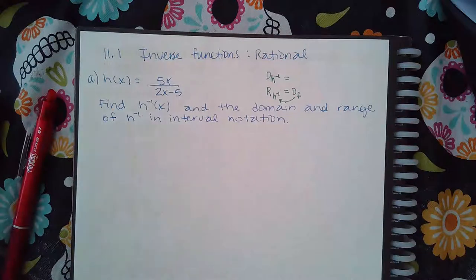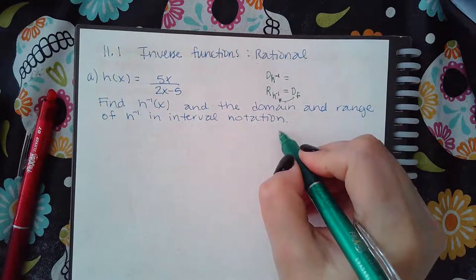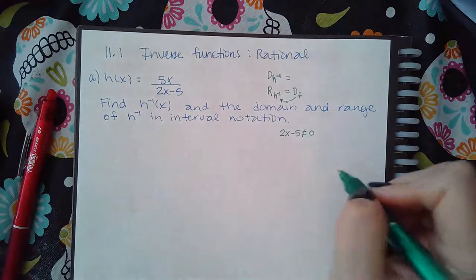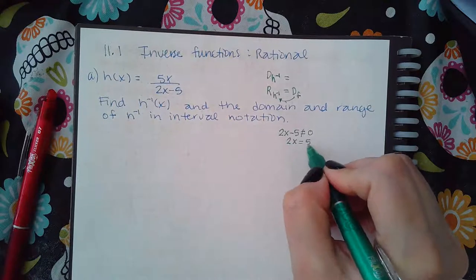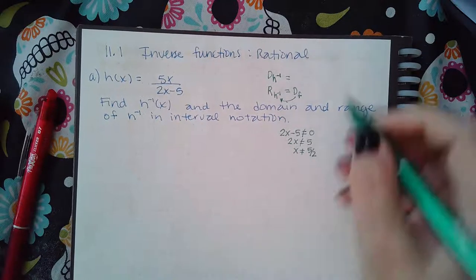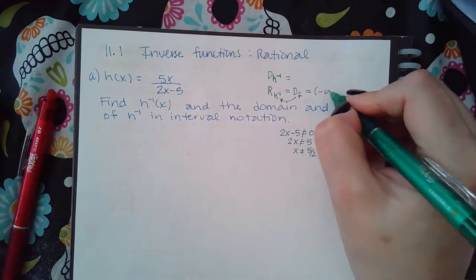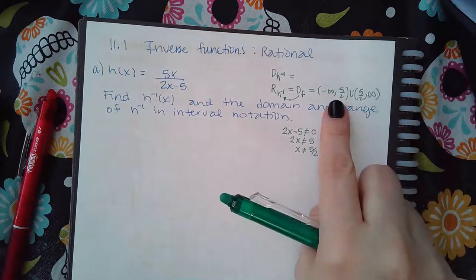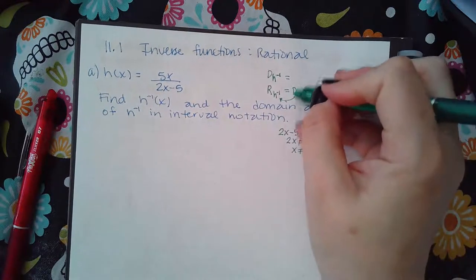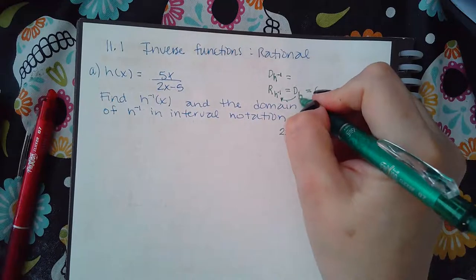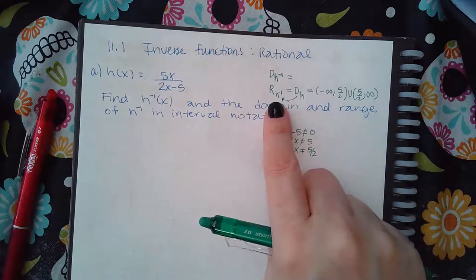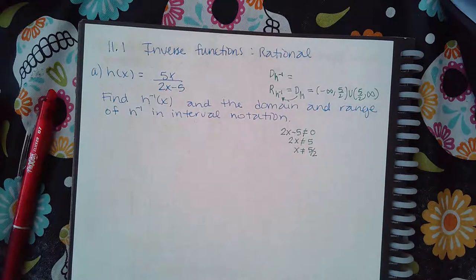Right now, just with the function being given, I already know what the range of h inverse is going to be, because the domain of h is all real numbers except when the denominator equals zero — your denominator can never equal zero. So I have 2x equal to 5, which means x cannot equal five halves. The domain of h is from negative infinity to five halves, and then from five halves to positive infinity. And that is the domain of h, which is the same as the range of h inverse. So we already have one piece solved and I haven't even found an inverse yet.